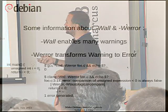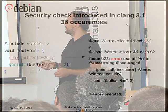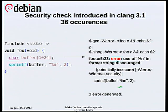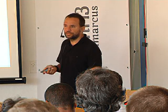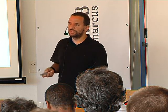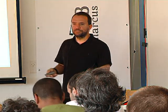I already showed you the example about unsigned int, but we also have more checks added. This one is a security issue — basically when you are using sprintf in a wrong way, Clang is going to trigger an error. We have about 36 occurrences of this error in the Debian archive, so that means we have at least 36 potential security issues regarding this. That doesn't mean they can be exploited, but we should investigate.